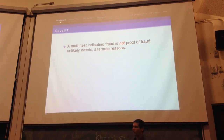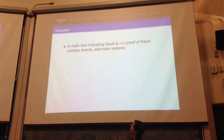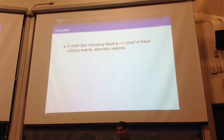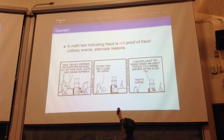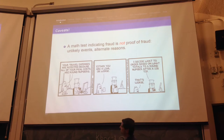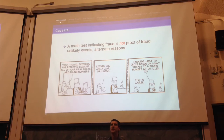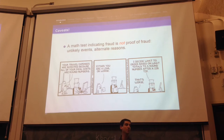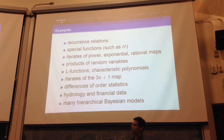Before I go into too much detail, I want to iterate: since I'm going to be talking about applications, it's nice to know the limitations of a method. A math test indicating fraud is not proof that fraud has happened — unlikely events can occur. I actually emailed Scott Adams for permission to use this Dilbert strip. The evil director of human resources says: 'Your travel expenses are rejected because all of your meal costs are round numbers. You're a liar or worse.' Dilbert replies: 'I decide what to order based on what totals to a round number after a 15% tip.' 'That's worse.' There are unlikely explanations. Just because your test says something is unlikely doesn't mean you're using a test that's appropriate.